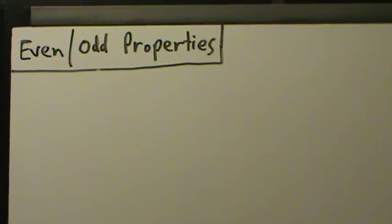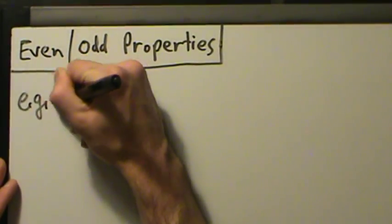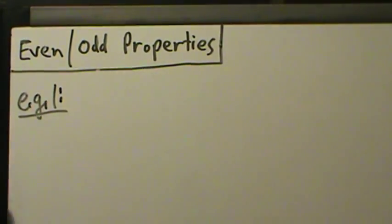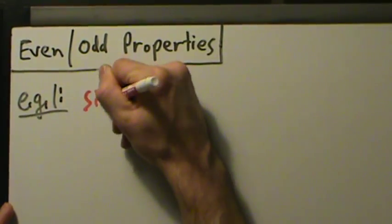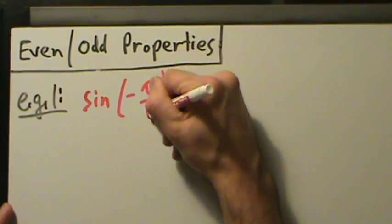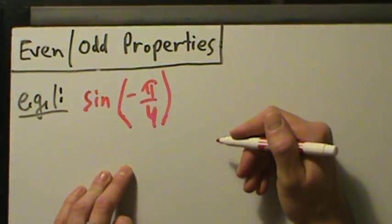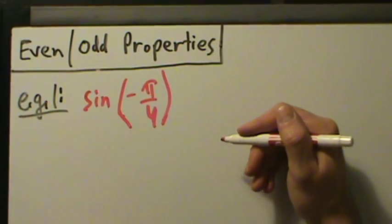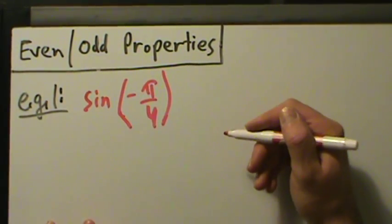Let's do some examples with even and odd properties for trig functions. So for example 1, we're going to use the even-odd properties and then look at a unit circle to verify the result.